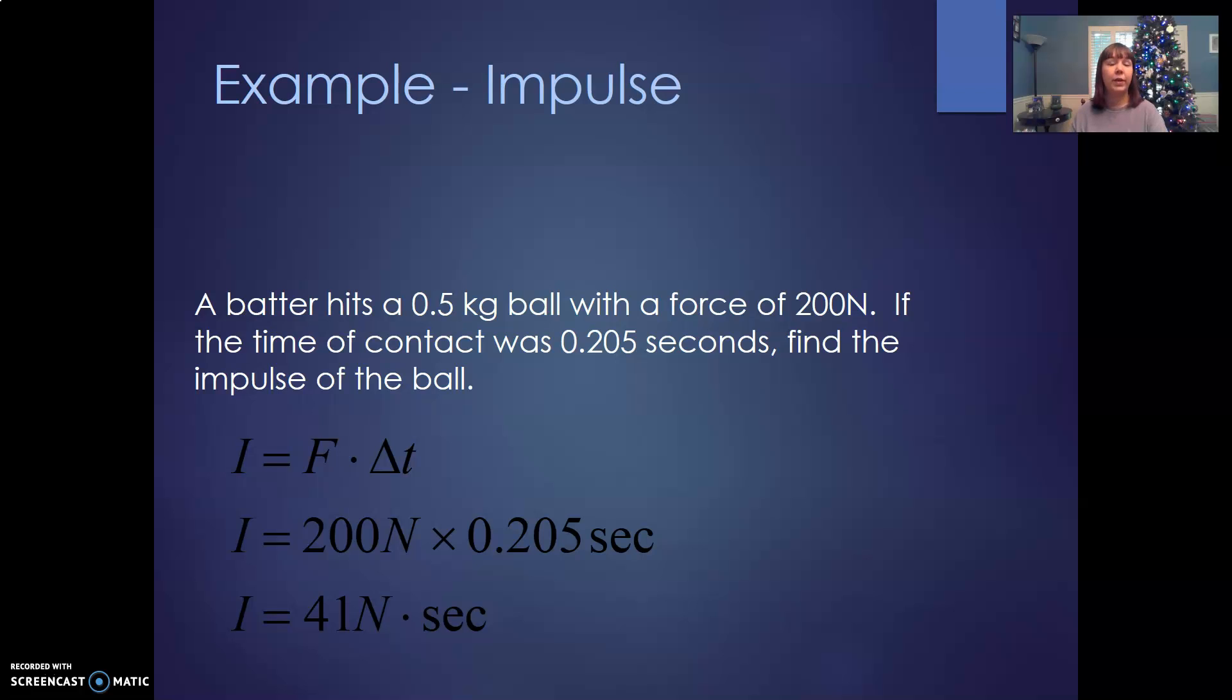If you want to increase that impulse, maybe the batter can only hit with 200 newtons. Maybe he's swinging it with all his might. How is he going to increase the impulse? Increase the time. Now you see the follow-through. If you follow through and you increase the time of contact, then you increase that impulse.